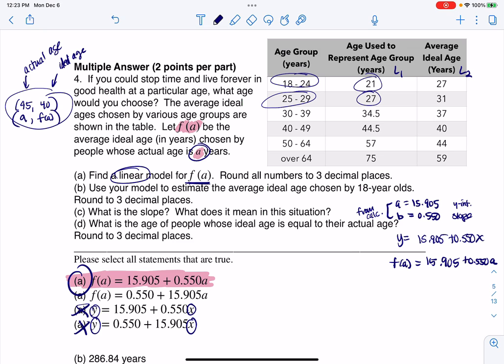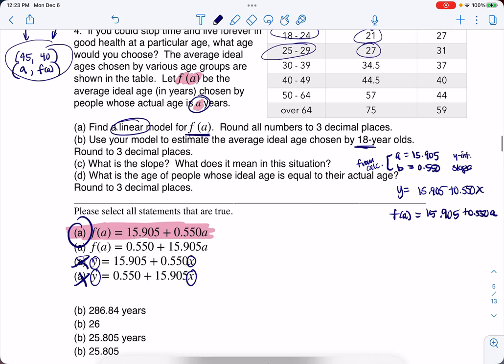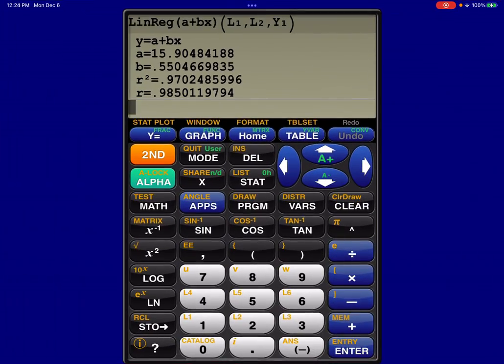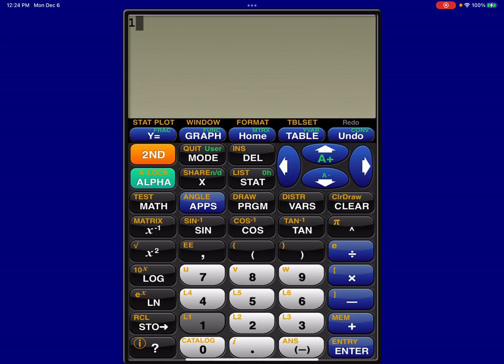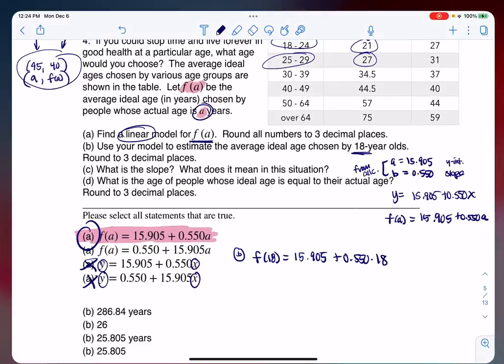All right, so this says use your linear model to estimate the average ideal age chosen by 18-year-olds. So I'm going to do a little extrapolation, because 18 is outside our initial data range, and that's fine, that's what linear modeling is for. So for part B, let's try and find F of 18. So I'm going to plug in 18 for my A value, so this is going to be 15.905 plus 0.550 times 18, and then let's just crunch that number on our calculator and see what we get. So I'm going to do 15.905 plus 0.550 times 18, and we are looking at about 25.805 years.